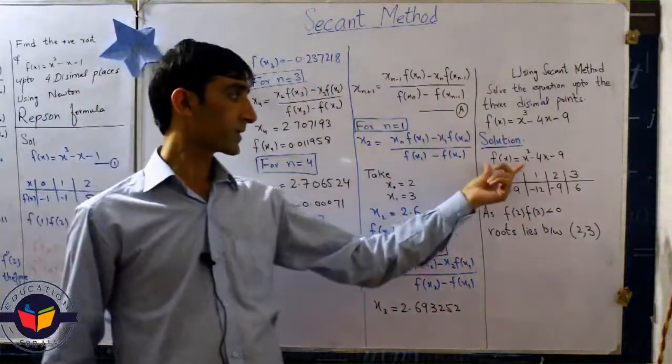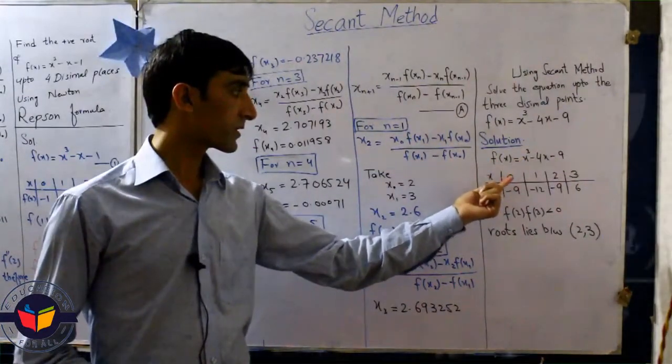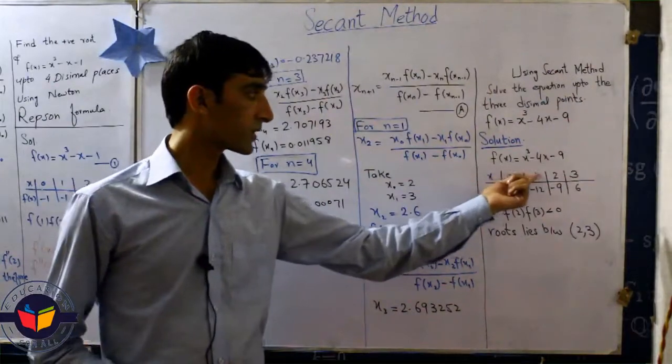In the first step we take f of x. After that we substitute some values: 0, 1, 2, and 3.